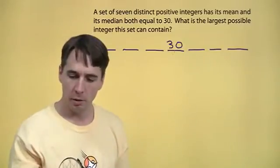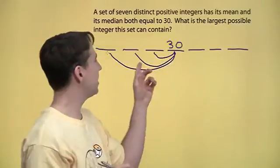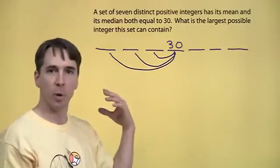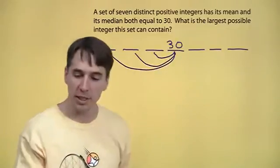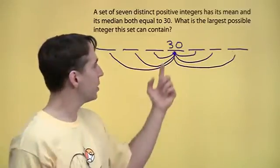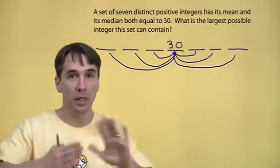Because if the mean is 30, well, that means if we take the distance from the mean to each of the lower numbers, so we take this distance, this distance, and this distance, and we add these three distances up. Okay, this is the distance from 30 down to all the small numbers. 30 is the mean, so those, the sum of those distances has to equal the same thing when we add all the distances to the larger numbers.